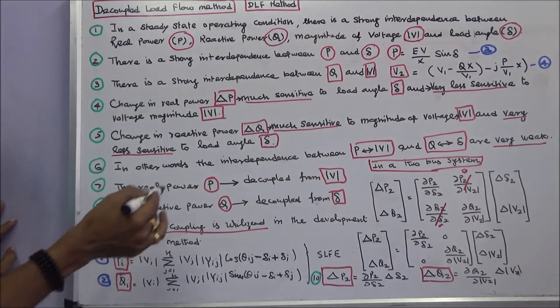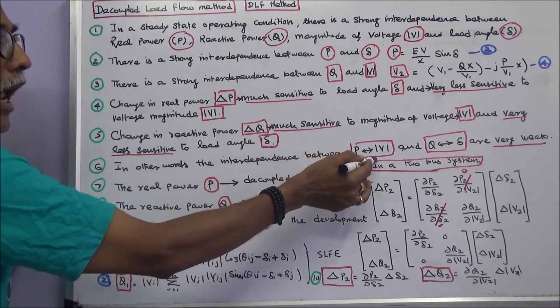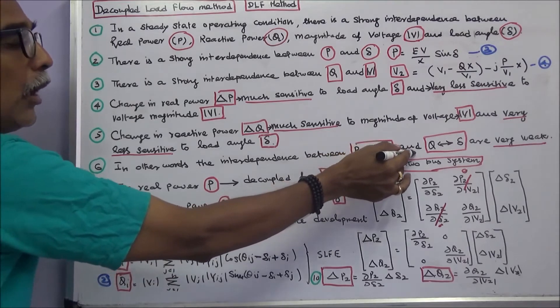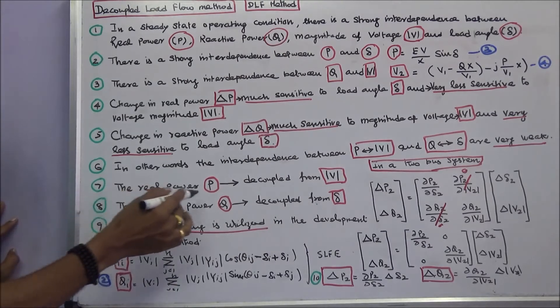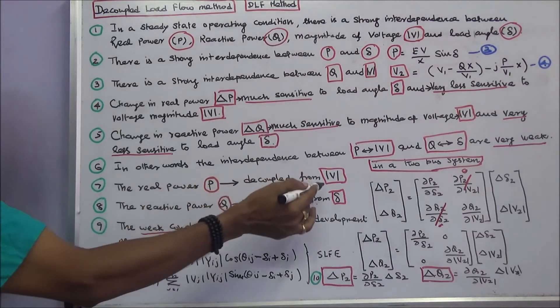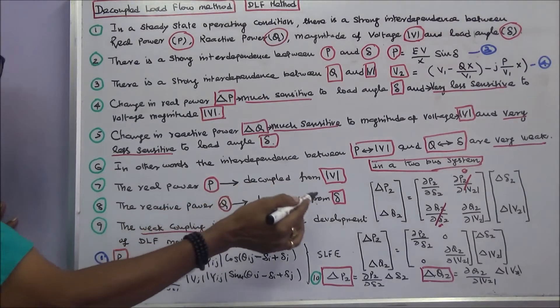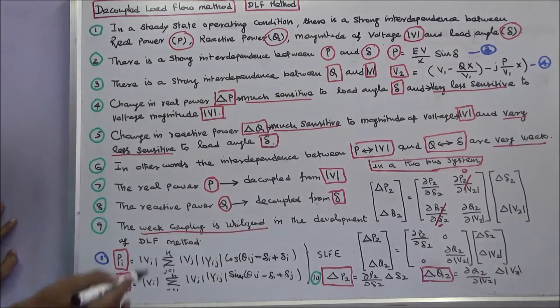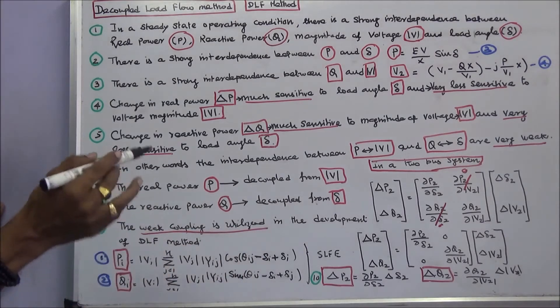In other words, the interdependence between P and modulus of V and Q and load angle delta are very weak. The real power P is decoupled from modulus of V. The reactive power Q is decoupled from load angle delta. The weak coupling is utilized in the development of decoupled load flow method.